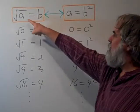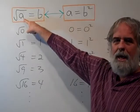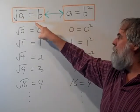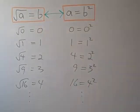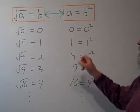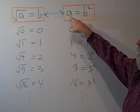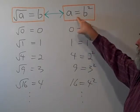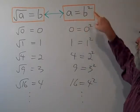When we write that the square root of a is equal to b, this means the same exact thing as saying that a is equal to b squared.